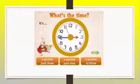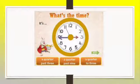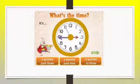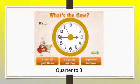So, can you tell what the time is? The minute hand is touching nine, while the hour hand is facing number three. Is it quarter past three? Or quarter past nine? Or quarter to three? Quarter to three. Good job. The time is quarter to three.